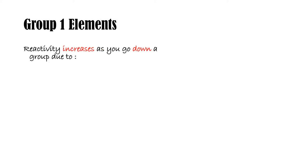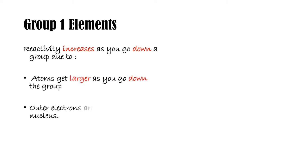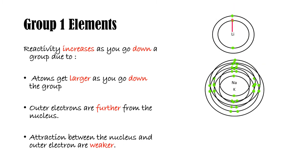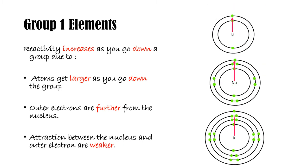Reactivity increases down Group 1, due to atoms getting larger as you go down the group, which means the outer electrons would be further from the nucleus. This then means that the attraction between the nucleus and the outer electron is weaker, meaning that the outer electron can be lost more easily.